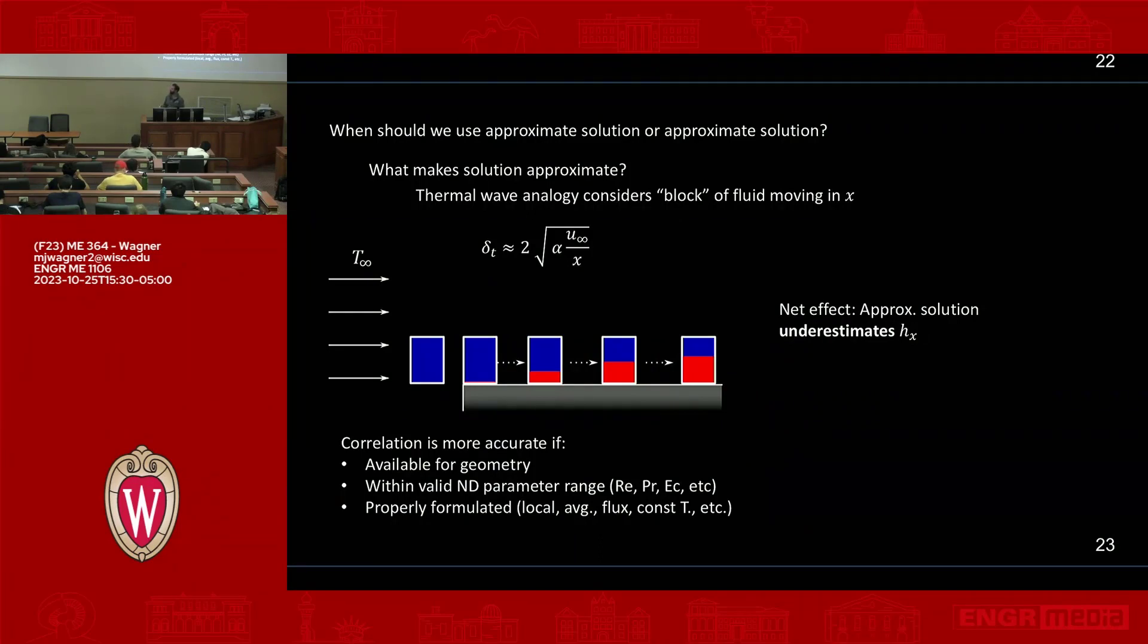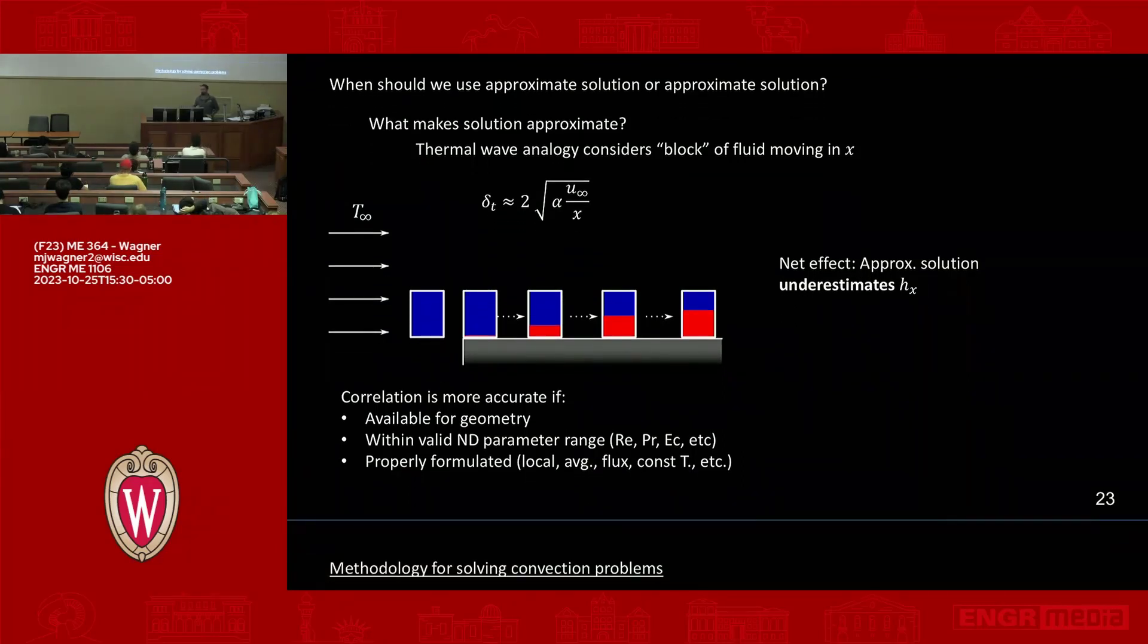So when do we want to use an approximation? First, I think it helps to think about what the approximation assumptions were. Now that we've had a little bit of time to think about convection and what's happening, let's step back and remember where we came from. What makes the solution approximate for this delta T model?